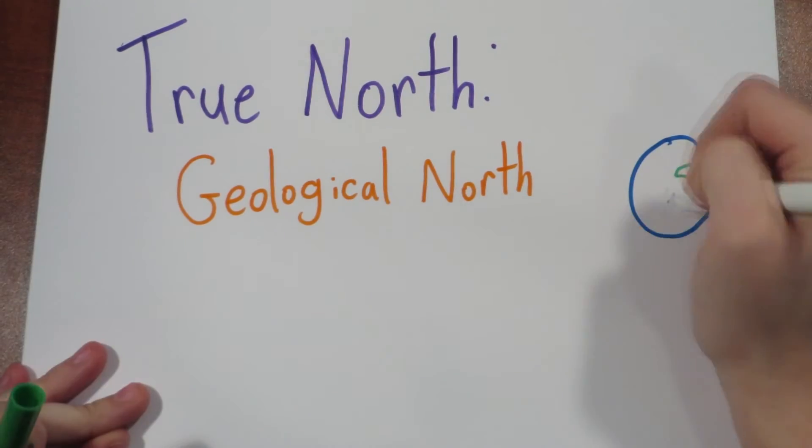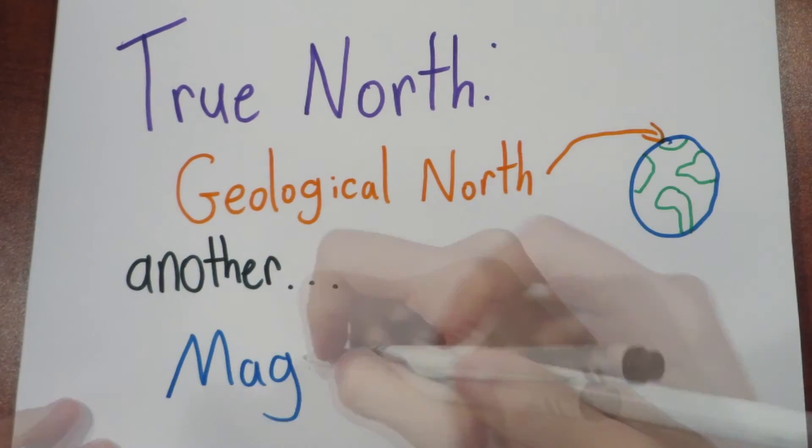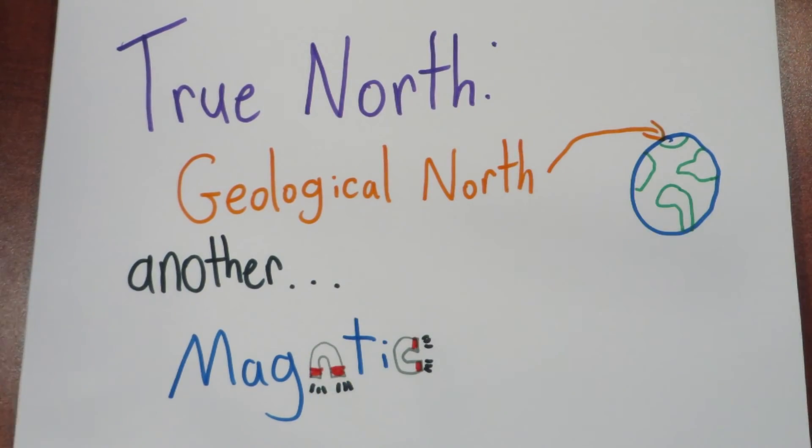So to wrap things up, the geological north is what we know as true north. However, there still is another north, which is the magnetic north, which is really located in the geographical south.